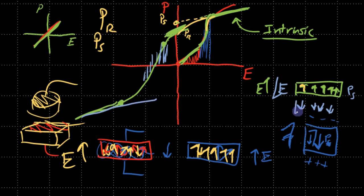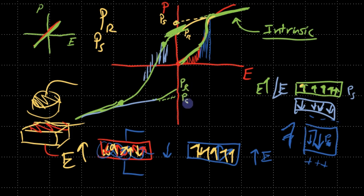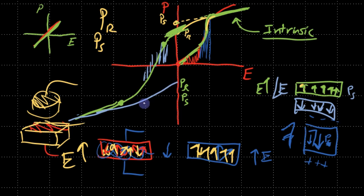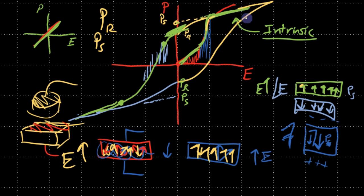As we come back from the negative side, we retain some of that polarization because we switched them permanently — some will relax as we return to zero. This also gives a remnant polarization on the negative side, and if you drew a straight line you'd get the corresponding spontaneous polarization there as well. As we then keep increasing the electric field back toward the positive side, the loop joins back up, completing the ferroelectric hysteresis loop.